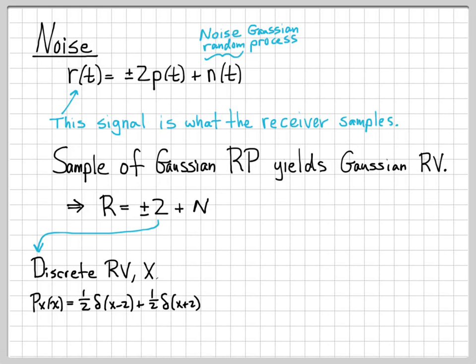The probability density function for this discrete random variable has a very interesting form. Since it only takes on two values, the PDF is zero everywhere except at those two values, so it consists of two impulses — one located at 2 and one at negative 2. We're assuming the probability of getting 2 or minus 2 are equally likely. So the PDF consists of two impulses of weight one-half located at minus 2 and 2.